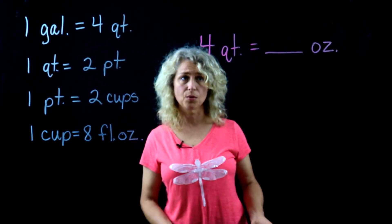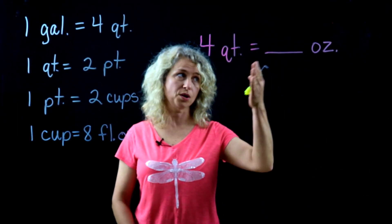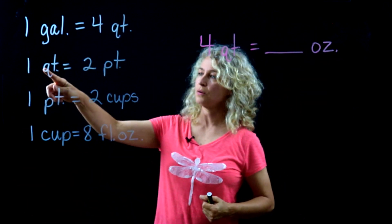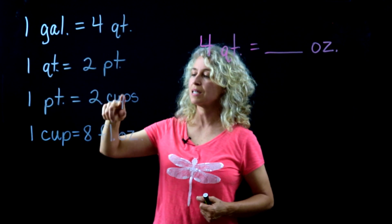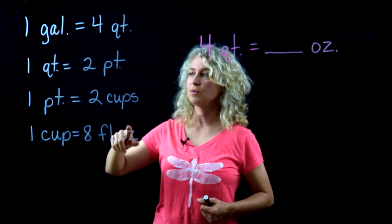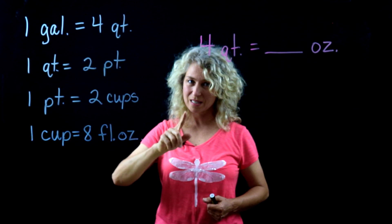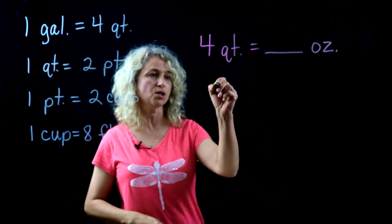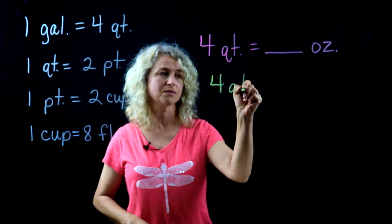In this final example we're going from four quarts to fluid ounces. So we have quarts to pints, pints to cups, and cups to fluid ounces. You can tell that this is not going to be a one-step problem—we're going to have to convert twice.